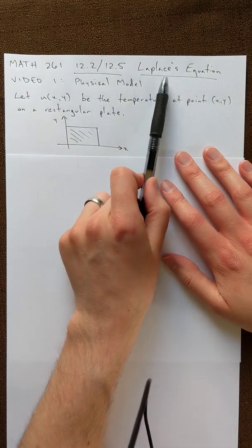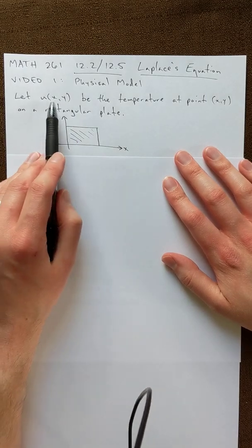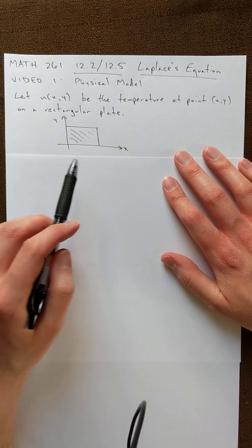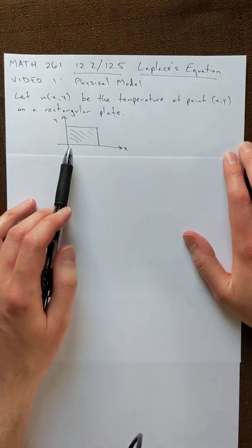Okay, in this video we're going to talk a little bit about the final equation in this chapter, which is Laplace's equation. So our physical representation is that u of x,y is temperature again, just like the heat equation, of a particular point on a rectangular plate.